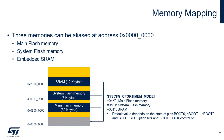The MEM_MODE field in the SysCFG_CFGR1 register selects which memory is accessible at address 0. Three memories can be aliased to address 0: main flash memory, system flash memory, or SRAM. Note that the default setting of these fields depends on the boot pin, option bytes, and control bit.